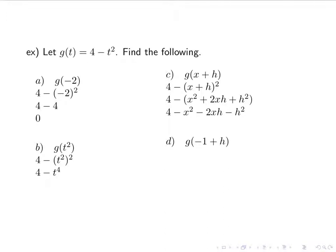And then lastly, g of negative 1 plus h. So instead of x plus h, I have a number plus h. So 4 minus negative 1 plus h squared. 4 minus 1 minus 2h plus h squared when I FOIL it out. 4 minus 1 is 3. And then I distribute the negative towards the rest of it. So I have 3 plus 2h minus h squared. Now we'll look at the line part of this.